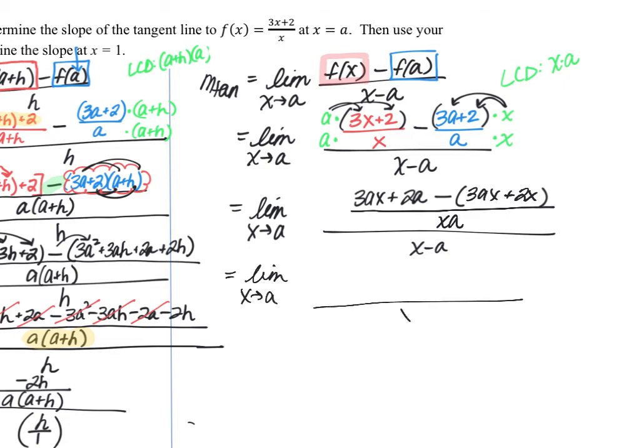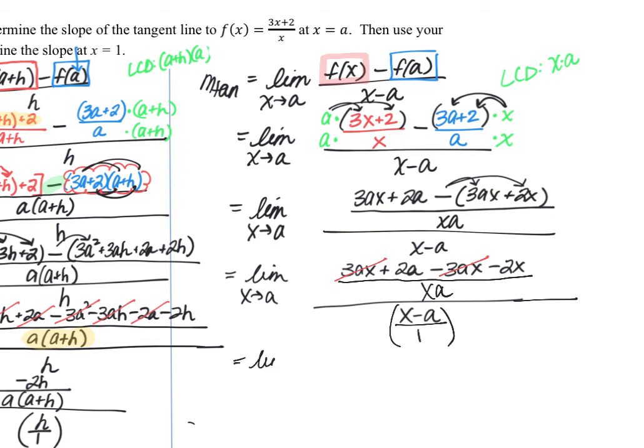So cranking through this algebra a little bit more, we are going to distribute the negative here in the numerator. So 3ax plus 2a minus 3ax minus 2x, all divided by that common denominator, which was x times a. Simplifying here, we're going to see that the 3ax is subtract out. And if you are starting to see the pattern, you know, where we're going to do this division because you have this complex fraction. So you're going to end up multiplying by the reciprocal. So if you're comfortable doing that at this step, what I have here in the numerator, I'm just left with 2a minus 2x, all over x times a. And then I'm going to multiply by the reciprocal, which will give me 1 over x minus a. That's totally fine with me.